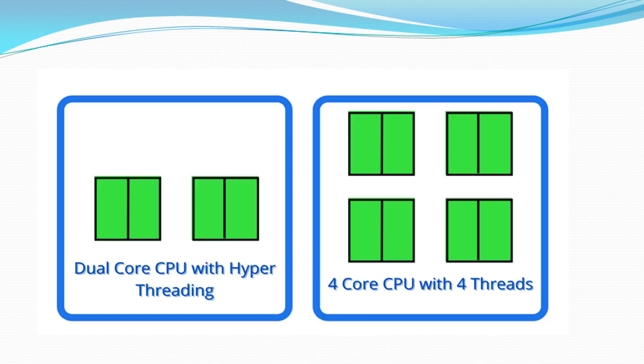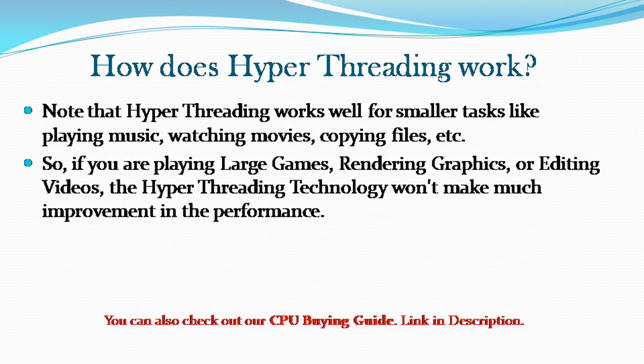Here is a 2-core CPU with 2 threads, and a 4-core CPU with 4 threads. Note that hyper-threading works well for smaller tasks like playing music, watching movies, copying files, etc. So if you are playing large games, rendering graphics, or editing videos, hyper-threading won't make much improvement in the performance.